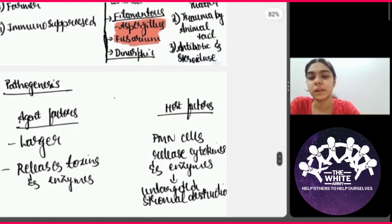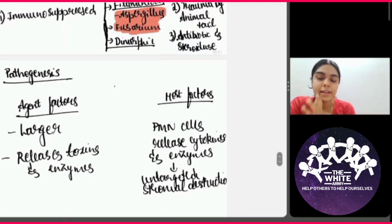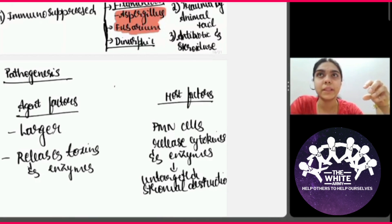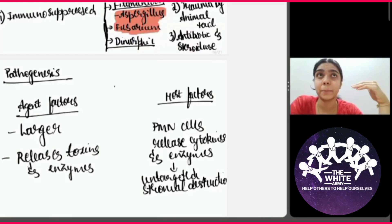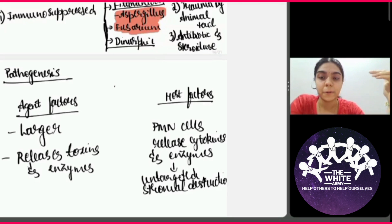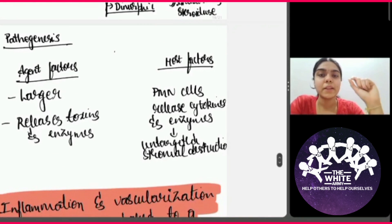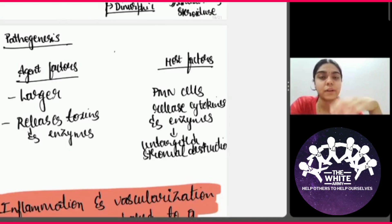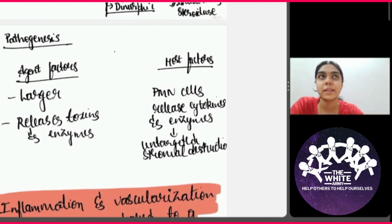When it comes to the pathogenesis of a fungal corneal ulcer, you can divide it into agent factors and host factors. Under agent factors, fungi are comparatively larger than bacteria. The immune system and polymorphonuclear cells cannot directly destroy the fungi entirely — it takes a long time to recognize fungi as a foreign body and start reacting to it. Additionally, the fungi release a lot of toxins and enzymes before the immune system can act upon them.